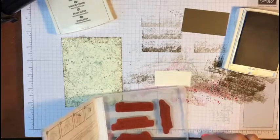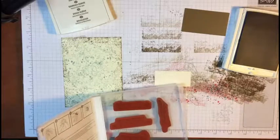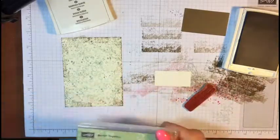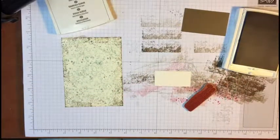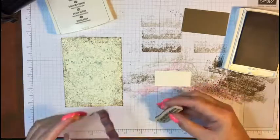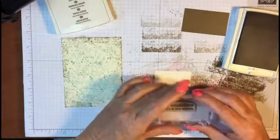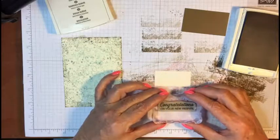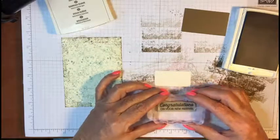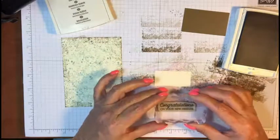Okay, where'd it go? There it is. Okay, we got a stamp block for this. Let's turn this over, kind of line that up there.